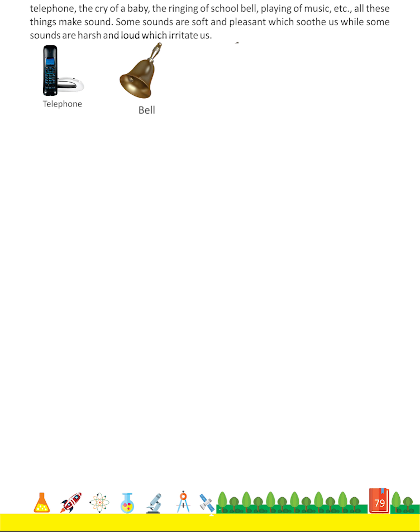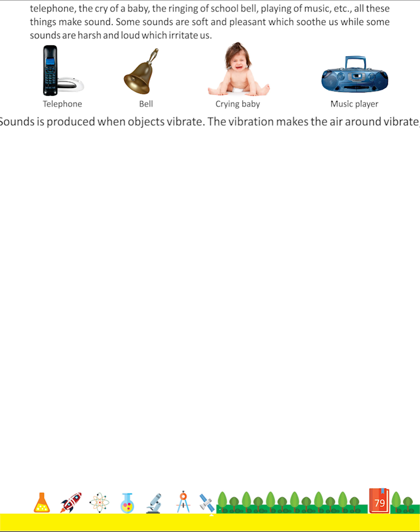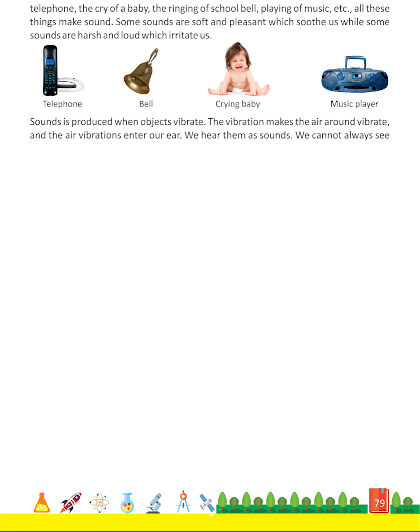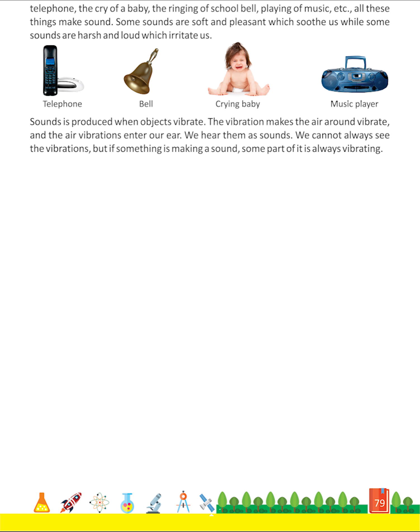Some sounds are soft and pleasant which soothe us, while some sounds are harsh and loud which irritate us. Sound is produced when objects vibrate. The vibration makes the air around vibrate, and the air vibrations enter our ear — we hear them as sounds. We cannot always see the vibrations, but if something is making a sound, some part of it is always vibrating.